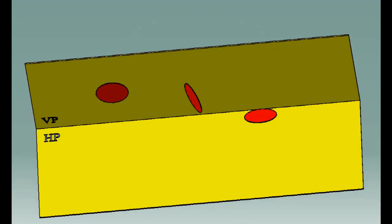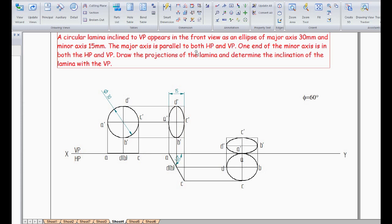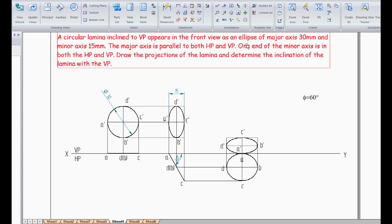In the next step, the major axis is being made parallel to both HP and VP. The major axis is going to be defined as D-dash and B-dash, which with respect to the actual circle correspond to capital T and capital B. D-dash B-dash is going to be perpendicular to the XY line, and we need to make the major axis parallel to both HP and VP. I need to rotate it — either clockwise or anti-clockwise. The next condition says that one end of the minor axis is on both HP and VP, meaning one end A is already in VP and C is away from VP.